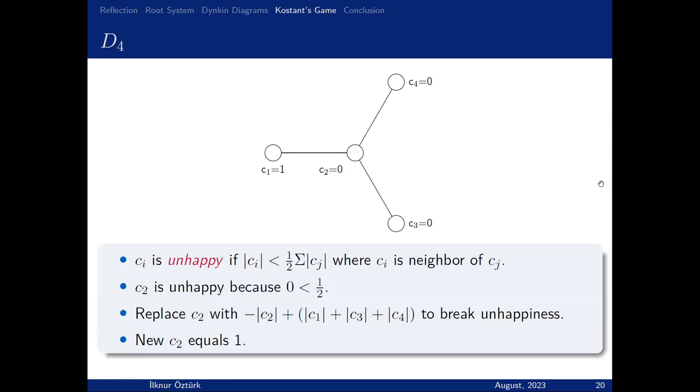Now we have 1 and the other side 0. With this step, I broke the balance, so maybe some of them are unhappy. But what is unhappy? Let's focus on C2. The sum of all neighbors, 1 plus 0 plus 0, is 1 divided by 3, which is greater than C2. So C2 is unhappy. I have to fix this because I don't want an unhappy vertex. How can I fix this? I replace C2 with the sum of their neighbors minus C2. In that case, 1 plus 0 plus 0 minus 0 is 1. So the new C2 equals 1.